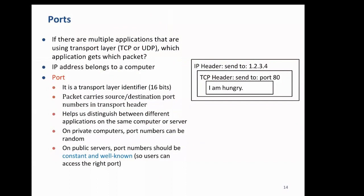A port is a transport-layer identifier which is 16 bits. A packet carries both source and destination port numbers, which helps differentiate where packets will go. If you create a new application, you are assigned a free port number. On the other hand, some port numbers are well-known — for example, HTTP runs at port 80, so any browser doing HTTP with a server connects to port 80 on the server.